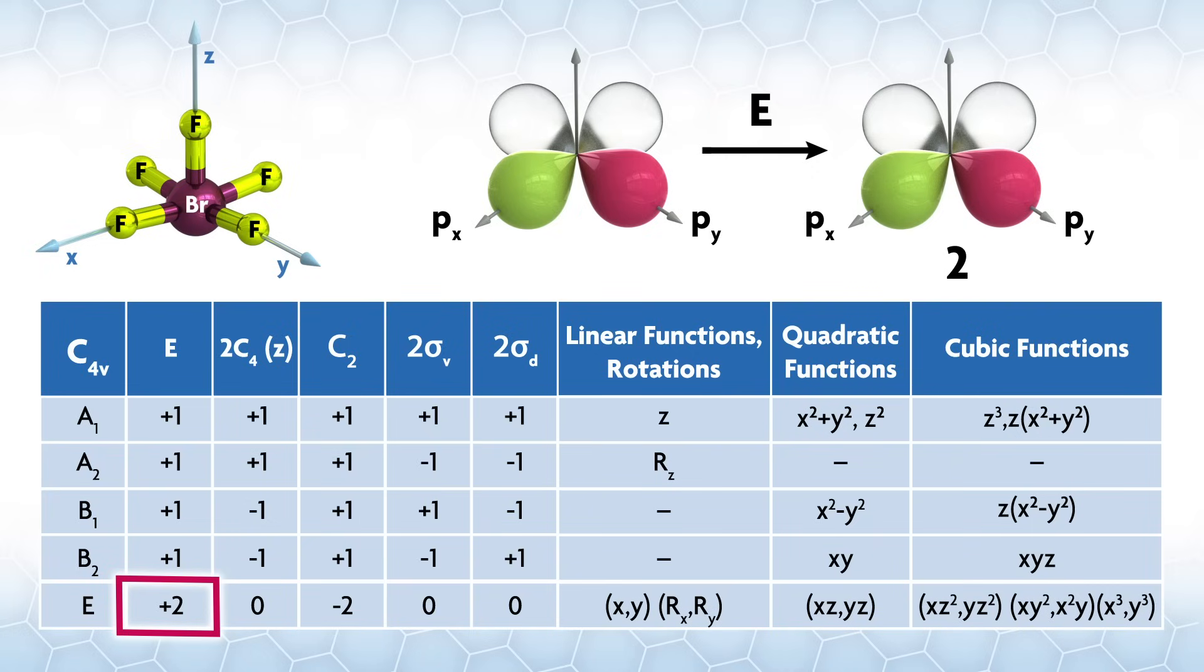The identity operation leaves them the same. Again, if no phase change occurs and the orbital doesn't move, we give it a plus one. We have two orbitals in the set and neither move, so plus one for each for a plus two under the E operation.